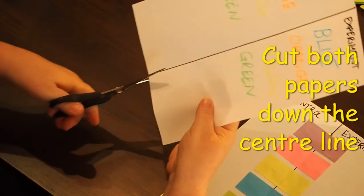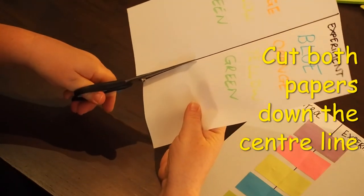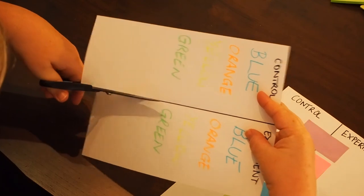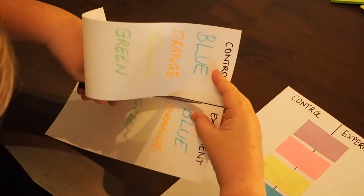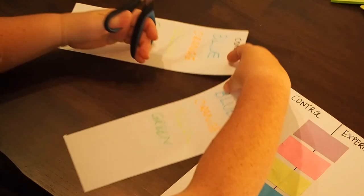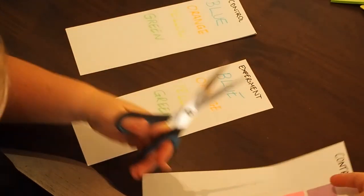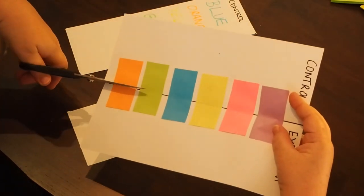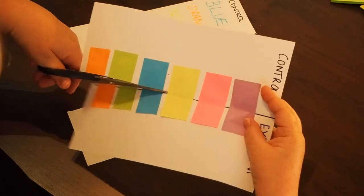Carefully cut the A4 piece of paper down the line you've drawn, separating the control and experiment pieces. Maybe get an adult to help if you need. The two control papers will stay inside, away from the sun, so we can compare them to the experiment pages later.